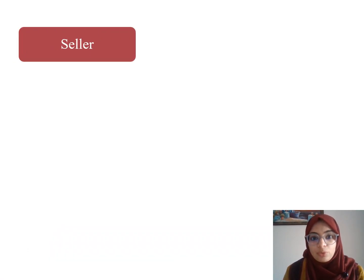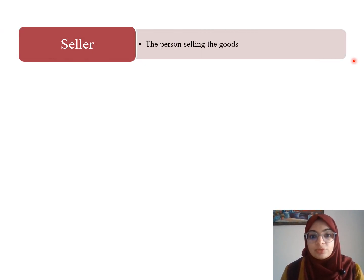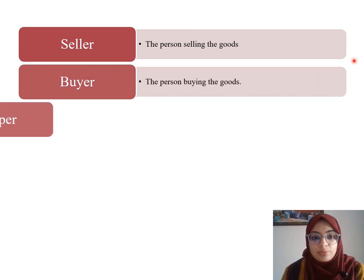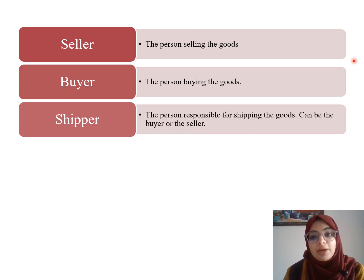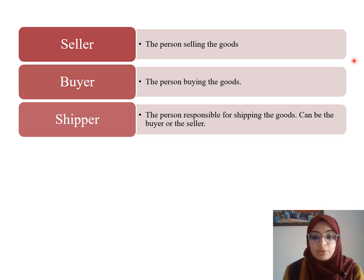We should not get confused because in international trade one party often plays two roles. For example, the seller can also be the shipper, or the buyer can be the shipper. The seller is simply the person selling the goods; the buyer is the person buying them. The shipper is whoever takes responsibility for shipping the goods. If your incoterms is ex-works, then the buyer is the shipper. In any other case, like CIF, DAT, or DPU, the seller will be the shipper.